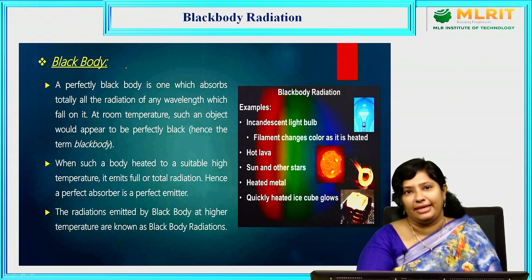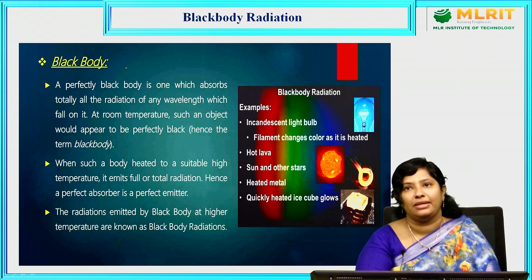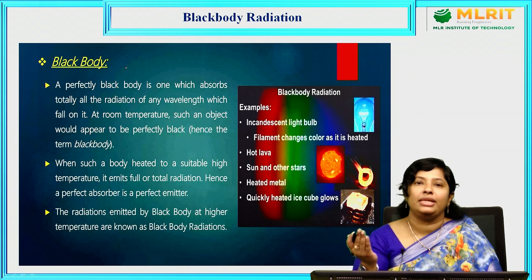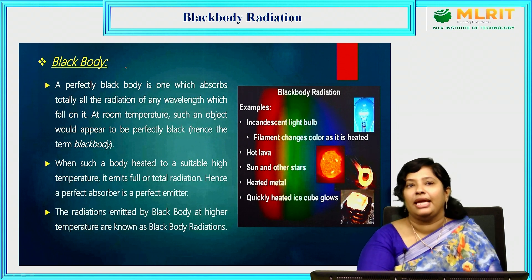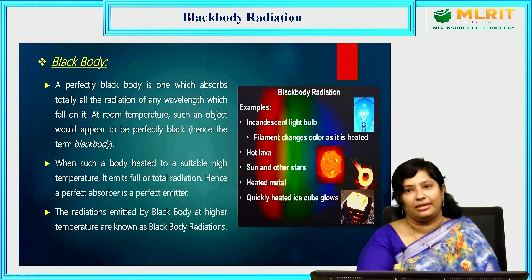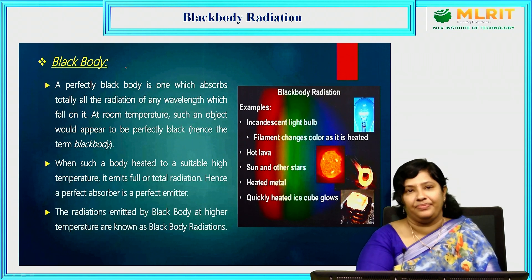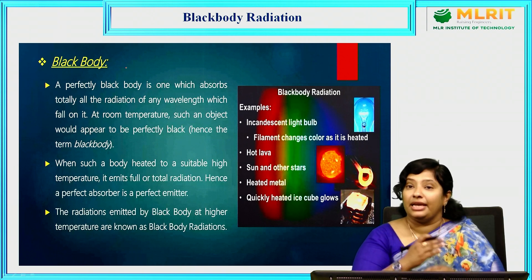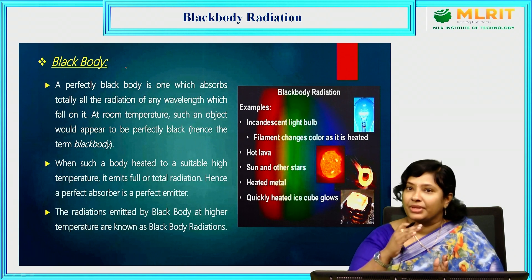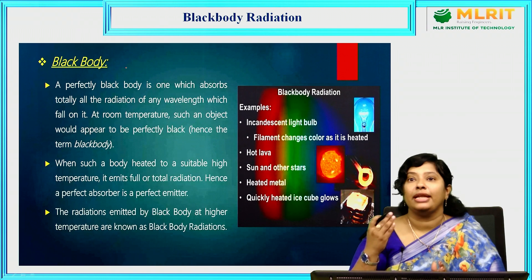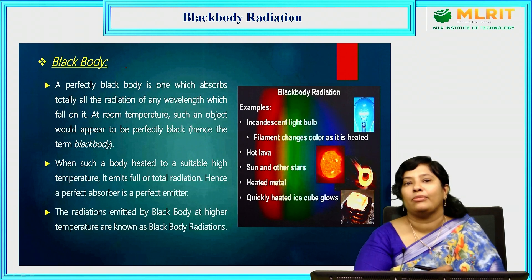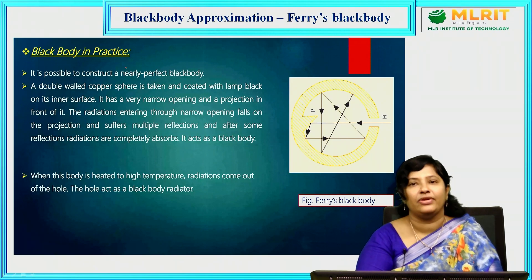When such a body is heated at a suitably high temperature, it emits all the radiation it has absorbed. Hence, a perfect blackbody is both a perfect absorber and a perfect emitter. The radiations emitted by the blackbody at high temperatures are known as blackbody radiations — it absorbs at room temperature and emits all radiations upon heating.